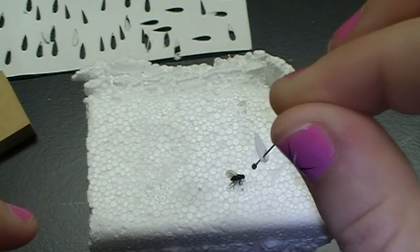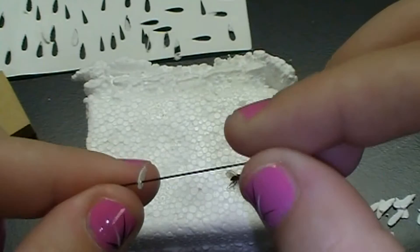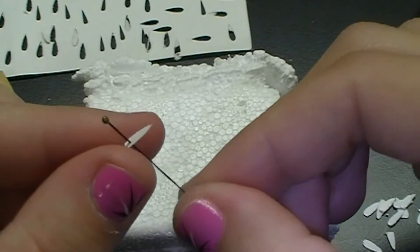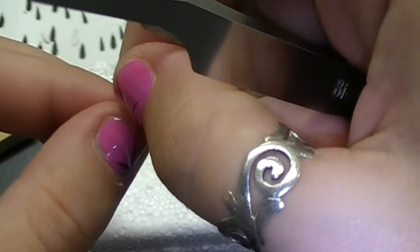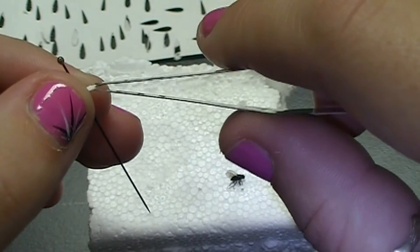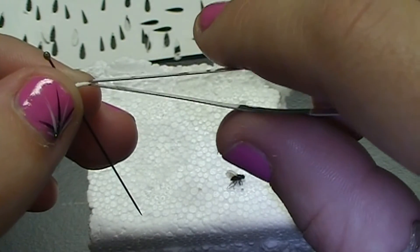There are two ways to point mount your insect. The first is just to leave the piece of paper or point the way it is and just glue it to the bottom of the insect. But I don't like this too much because it can cover up a lot of the characteristics that you need to actually identify it later.